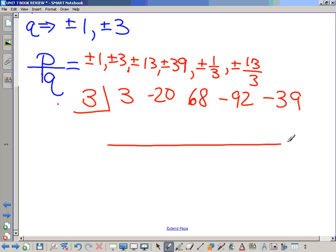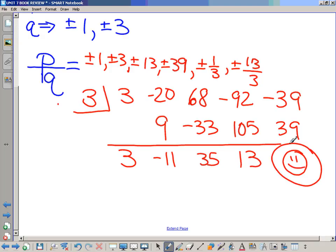If you don't know synthetic division, here's your last chance before the test. You can go and watch some videos on it. Plenty on there. Bring the 3 down. Multiply. 9. Add. Multiply. 68 minus 33 is 35. Multiply. Triple 35 is 105 minus 92 is 13. Nice. 3 times 13 is 39 remainder of 0. Okay?